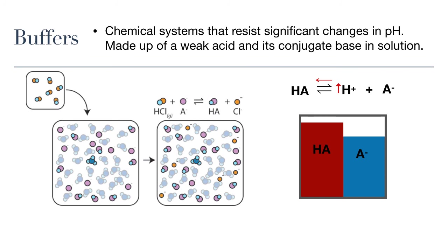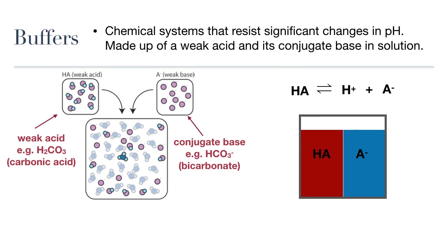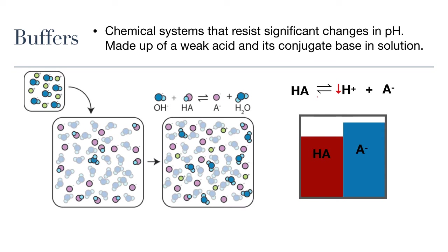And this is Le Chatelier's principle at work here, too. We have a reversible reaction that has shifted to the left due to a stressor. In this case, a change in concentration on one side of the equation. Now, the opposite will happen if we add a strong base, which will decrease the hydrogen ions in solution and shift the equation towards the right.